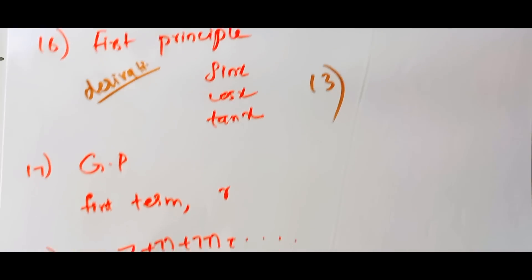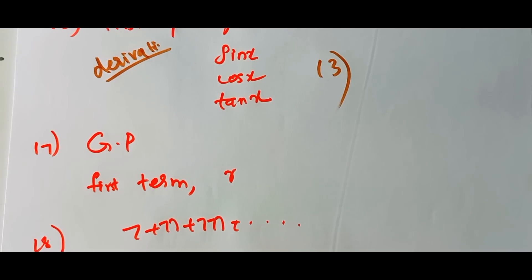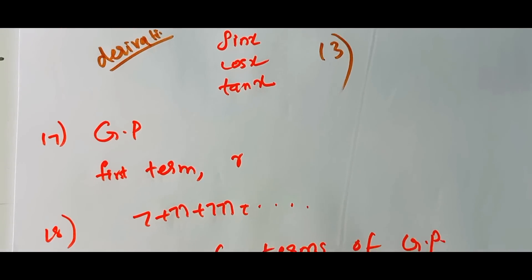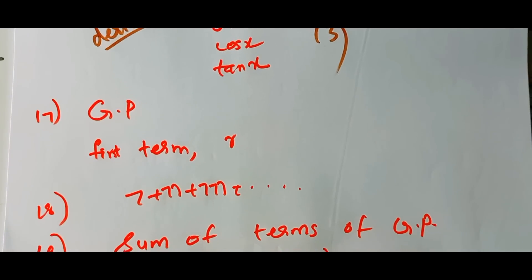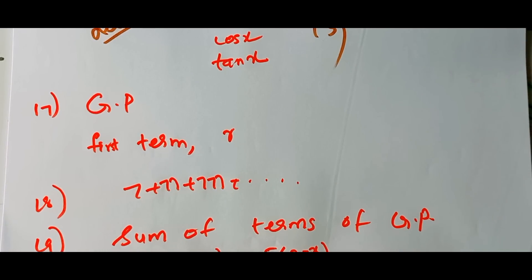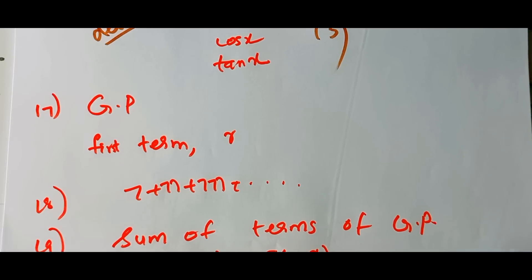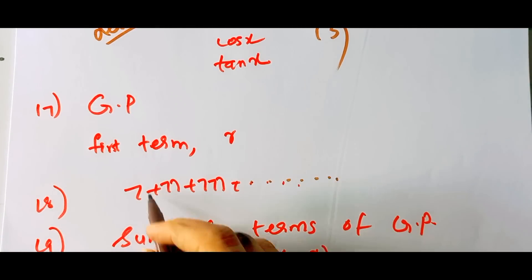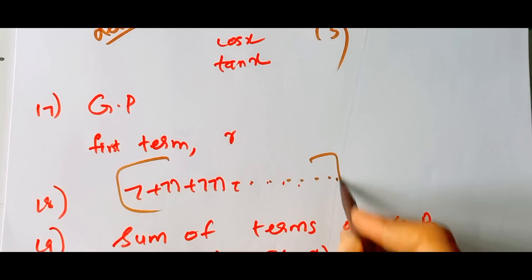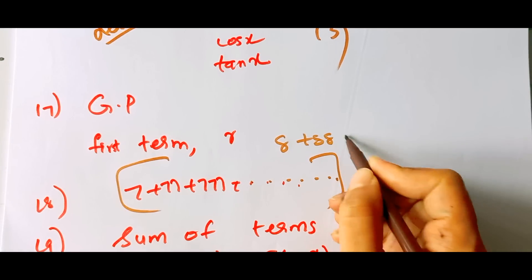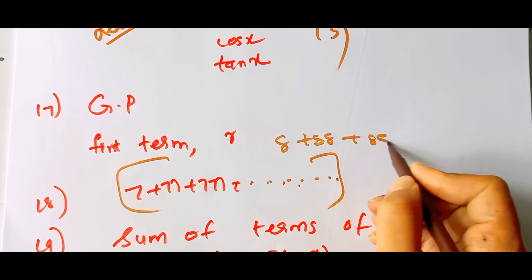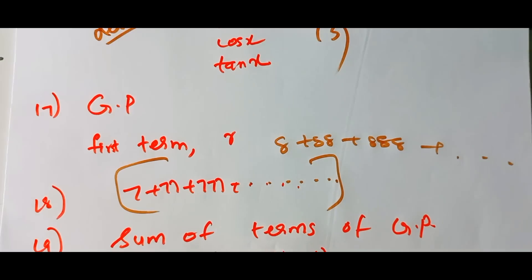If you look at GP: the first term and common ratio, find the 100th term. Find the sum of the first 10 terms of a GP. You have to take the sum. Check the sum of GP.